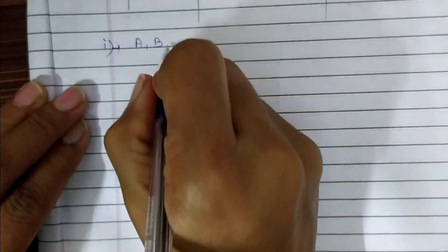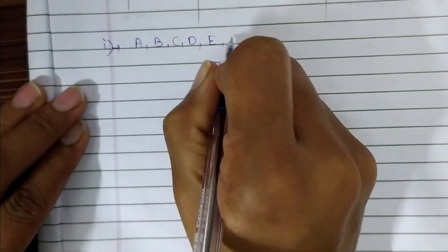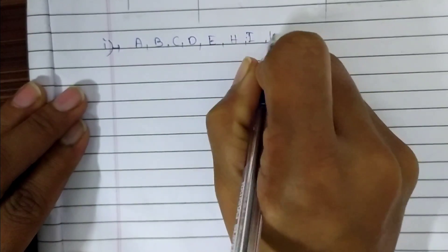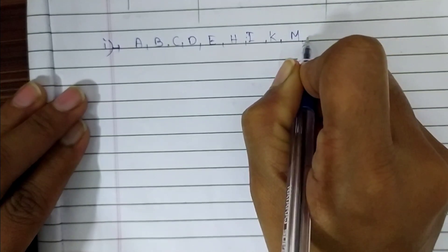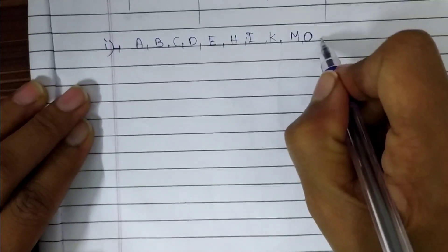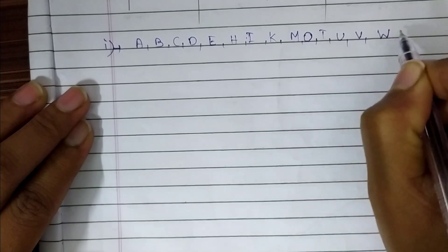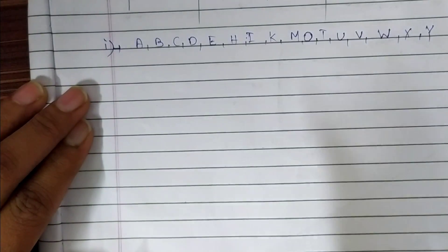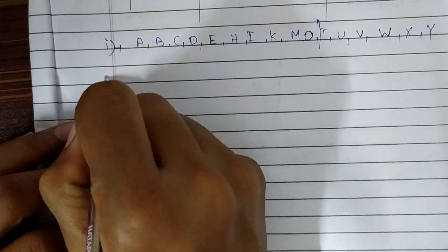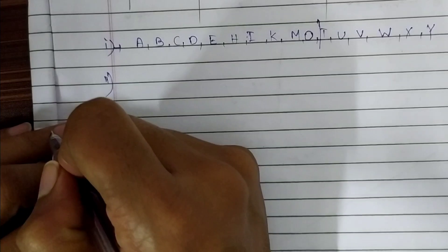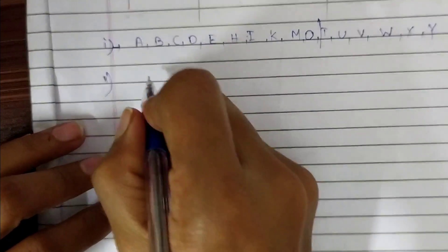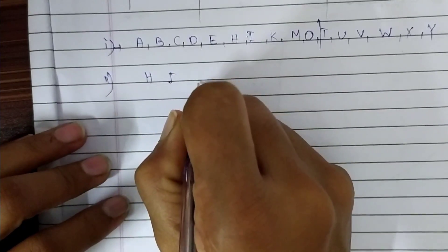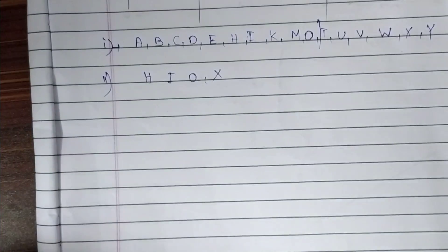The question asks which ones have an axis of symmetry. The answer is: A, B, C, D, E, H, I, K, M, O, T, U, V, W, X, and Y have axes of symmetry. Which ones have more than one axis of symmetry? The answer is: H, I, O, and X have more than one axis of symmetry.